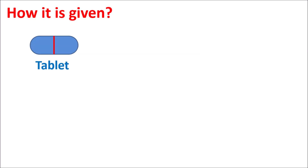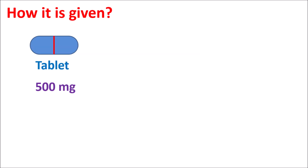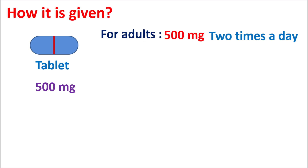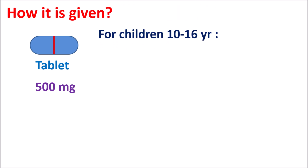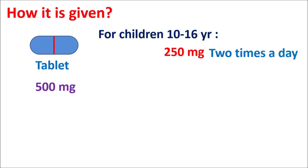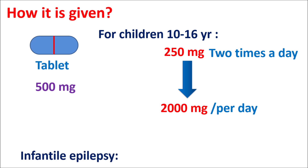How is it given? This drug is available as a tablet at a strength of 500 mg. Initially, for adults and children aged 17 years or older, it can be given at a dose of 500 mg twice daily — a total of 1000 mg per day. The dose can be slowly increased after one week of treatment to a target dose of 3000 mg per day. For children aged 10 to 16 years, it can be started at 250 mg twice daily — a total of 500 mg per day — and slowly increased up to 2000 mg per day. In the treatment of infantile epilepsy, this drug is given based on body weight at a dose of 50 mg per kg per day.